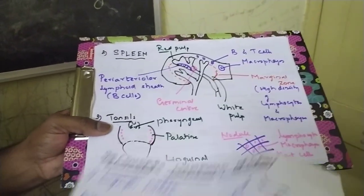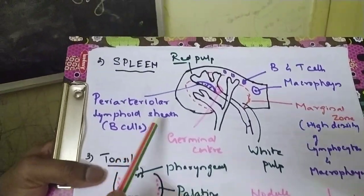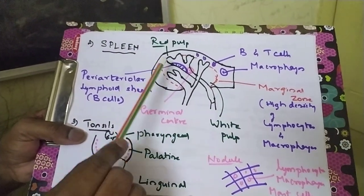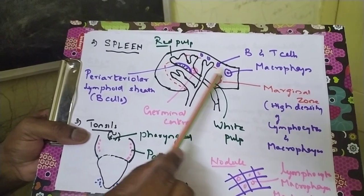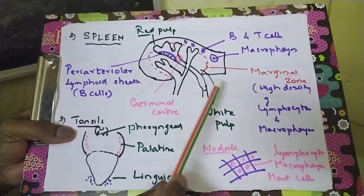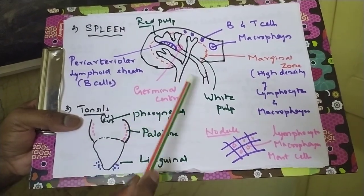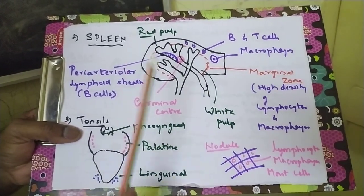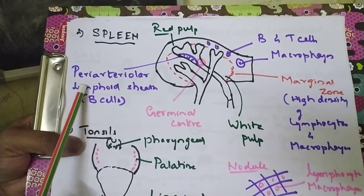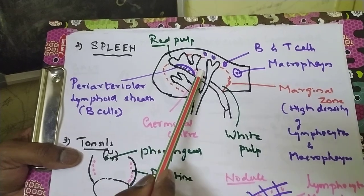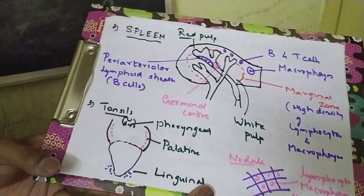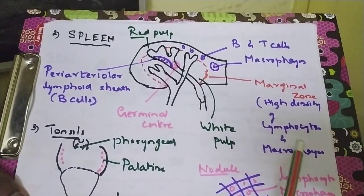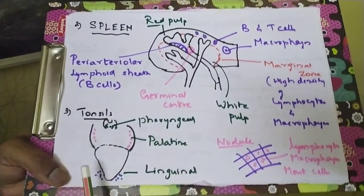The next organ is the spleen, the second largest secondary lymphoid organ. It has red pulp and white pulp — the outer red pulp and the inner white pulp — and a marginal zone with a high density of lymphocytes and macrophages. The red pulp also has B lymphocytes, T lymphocytes, and macrophages. There is also a peri-arteriole lymphoid sheet with B cells and a germinal center that generates more B cells. Memory cells can also be present here, enabling it to help in secondary immune response.